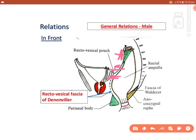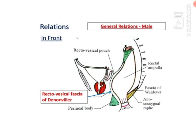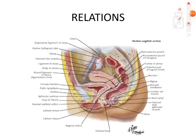Visceral relations — in males, the anterior relations include the urinary bladder, prostate, seminal vesicles, vas deferens, and ureter.